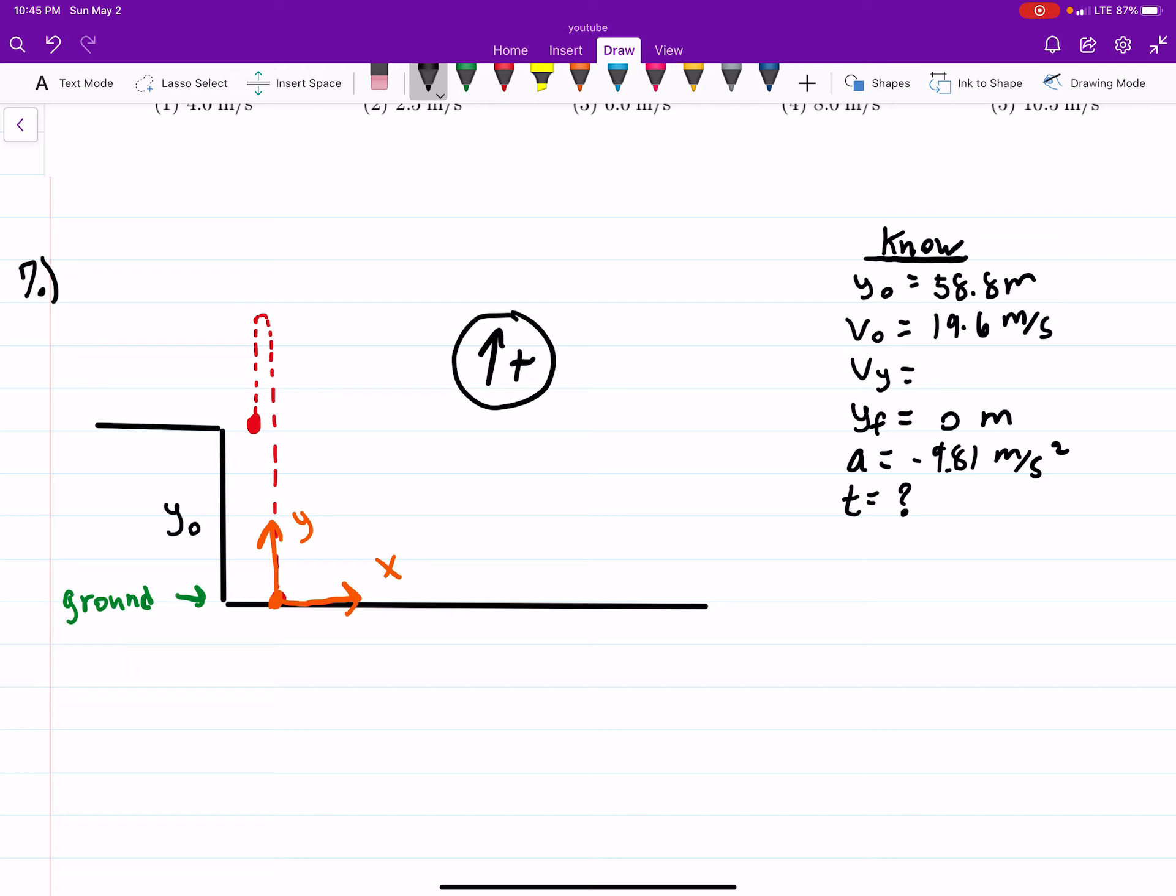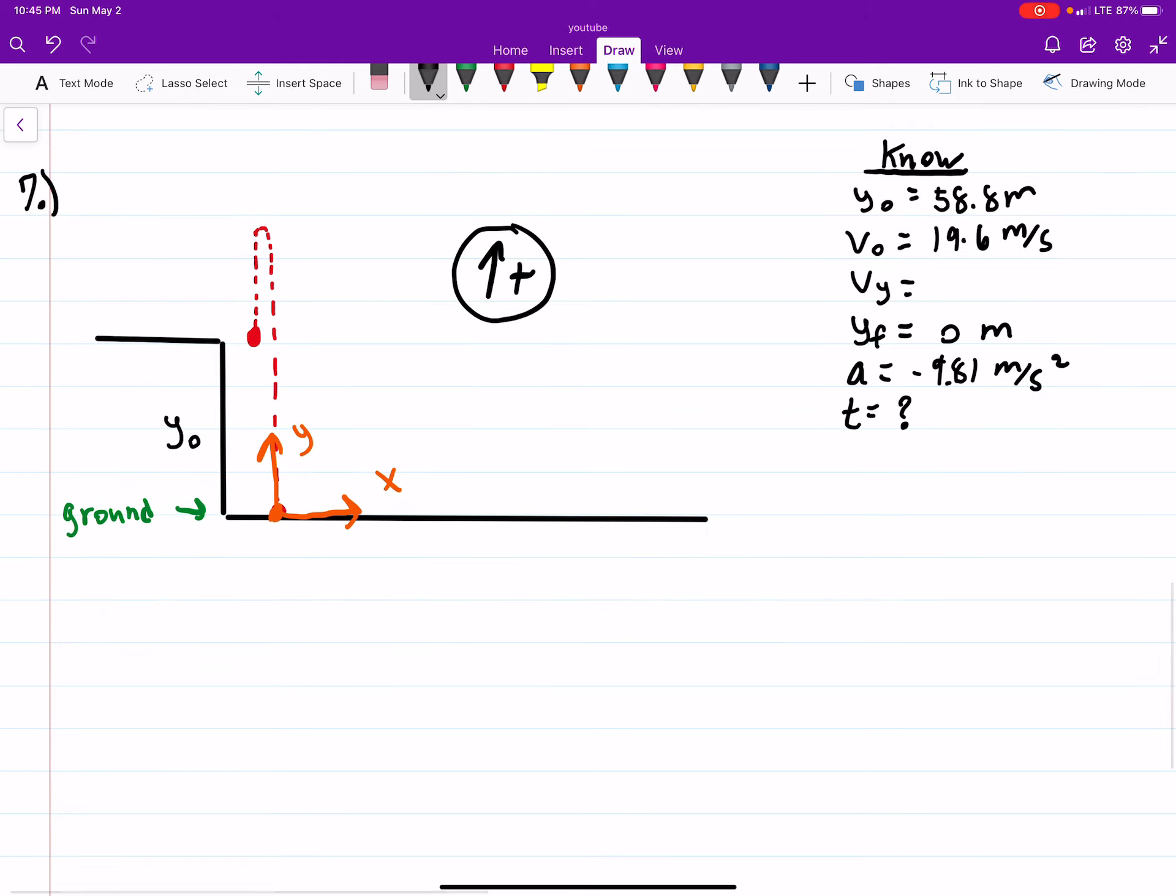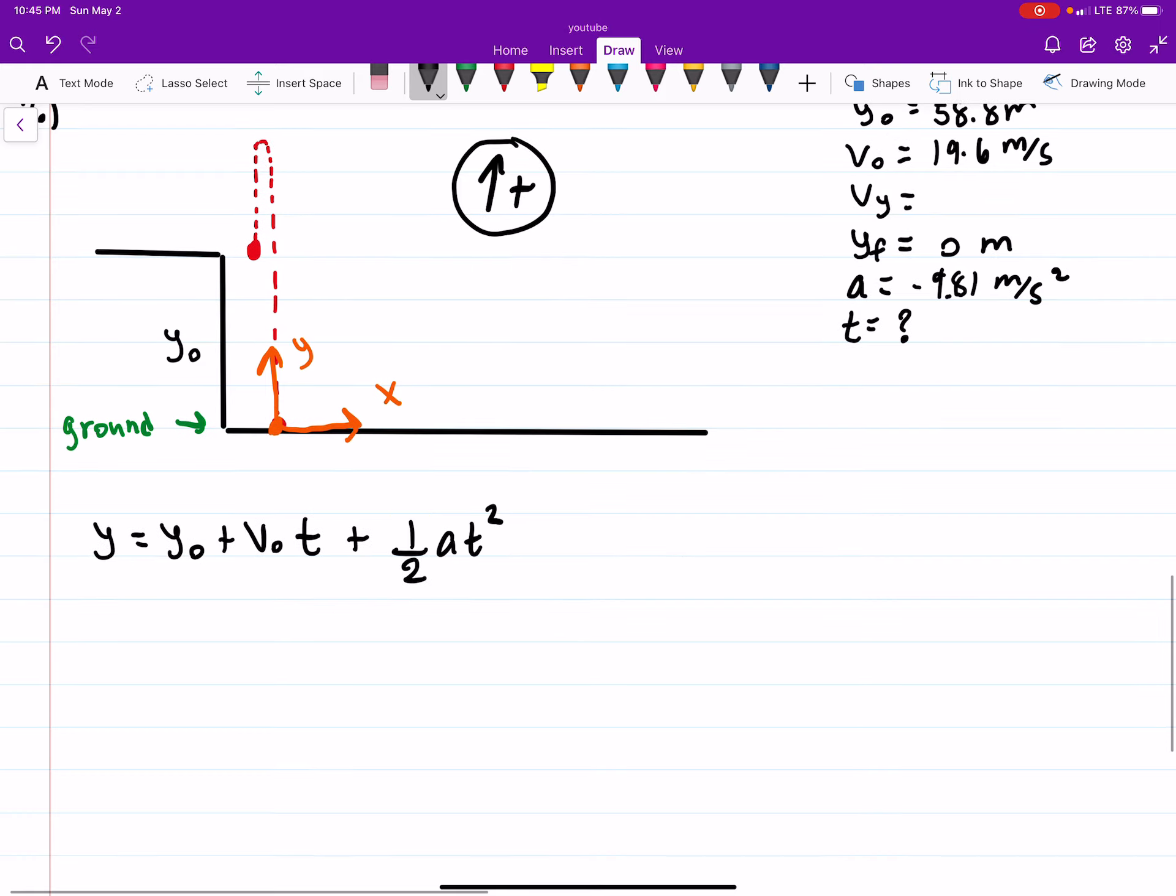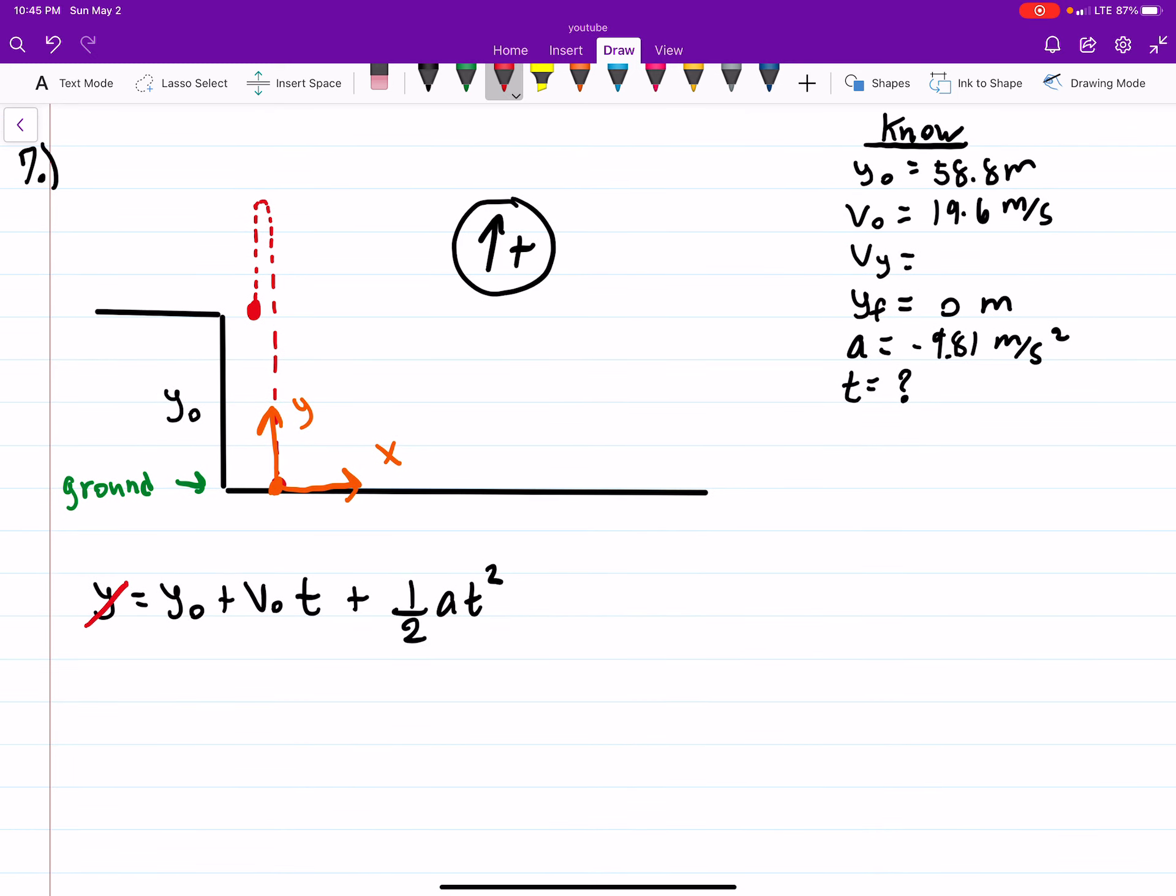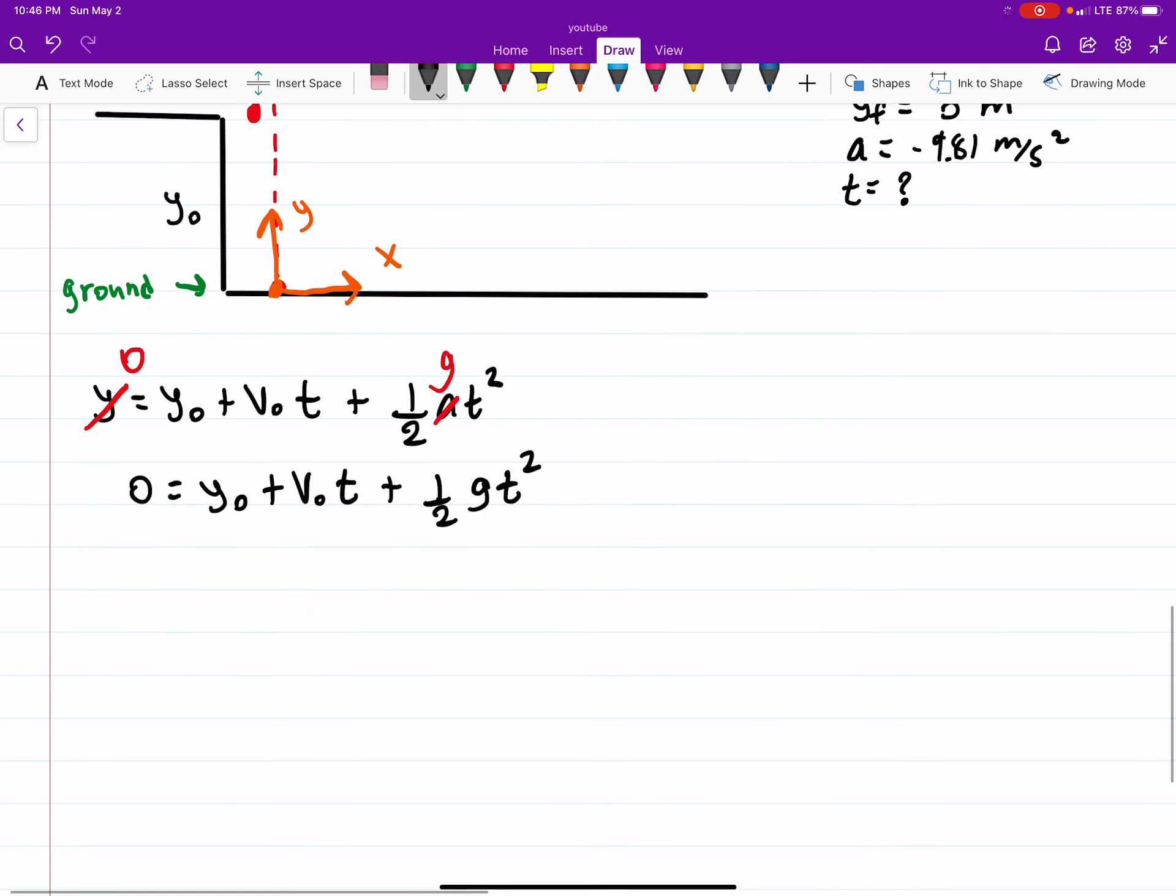Now what we need to do is use our kinematic equations to solve for what we need to know. One of the most common ones we'll use is Y equals Y-naught plus V-naught T plus 1/2 AT squared. This is one of our most popular kinematic equations. You'll have maybe like four or five that you need to consider, but this is a very common one we end up using. So let's plug in what we know.